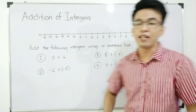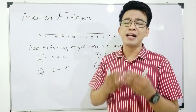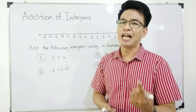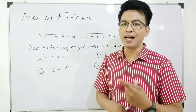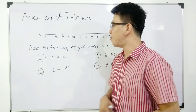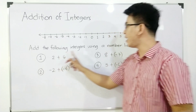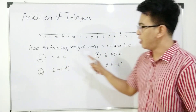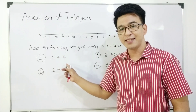Ngayon, ang tanong dito, paano ba tayo mag-add ng integers gamit ang number line? Madali lang. Example tayo — add the following integers using a number line, in which we have 2 plus 6.